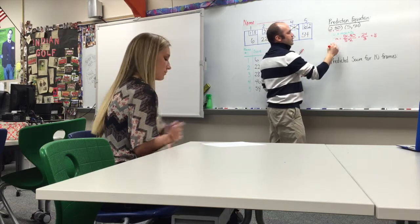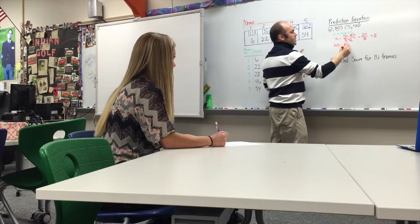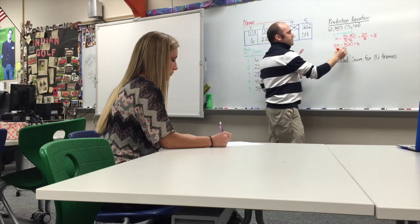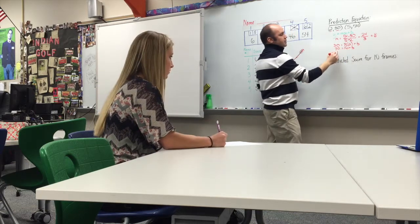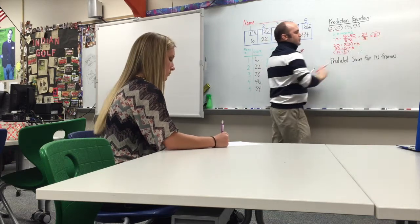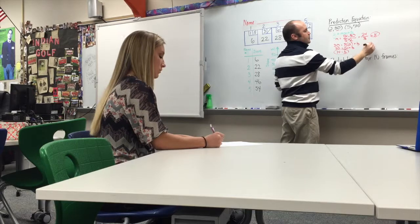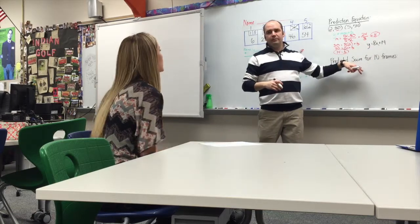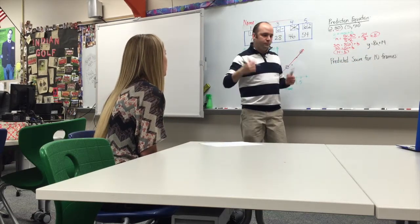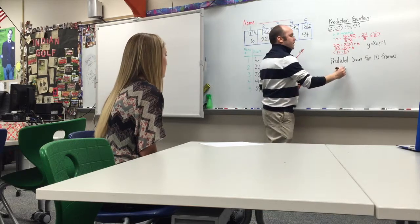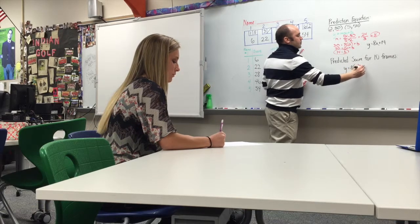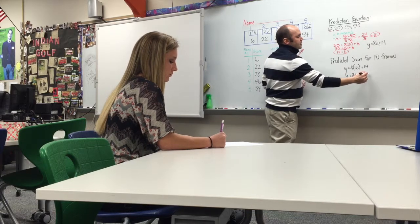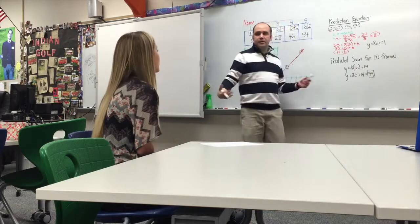Then we plug that back into the equation with one of our other points to find b. Say we plug in 2 and 30. So y is 30, our slope is 8 times 2 plus b. If we solve this equation, we get 16 plus b; subtract 16 — 14 equals b. So your equation is y equals 8x plus 14. We're going to use this equation to predict your score after 10 frames. We're going to plug 10 in for x: y equals 8 times 10 plus 14, so y equals 80 plus 14, which is 94.